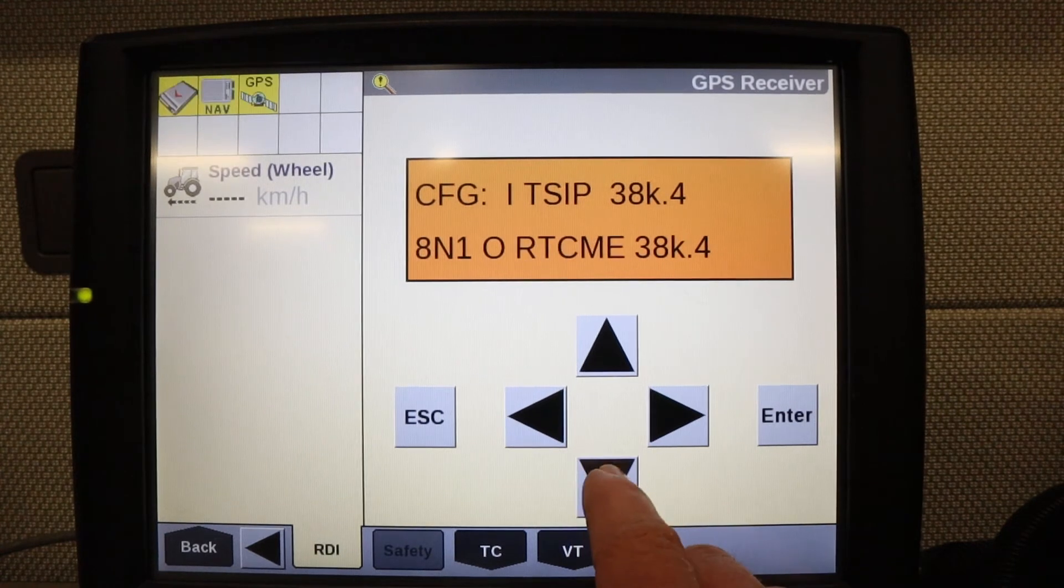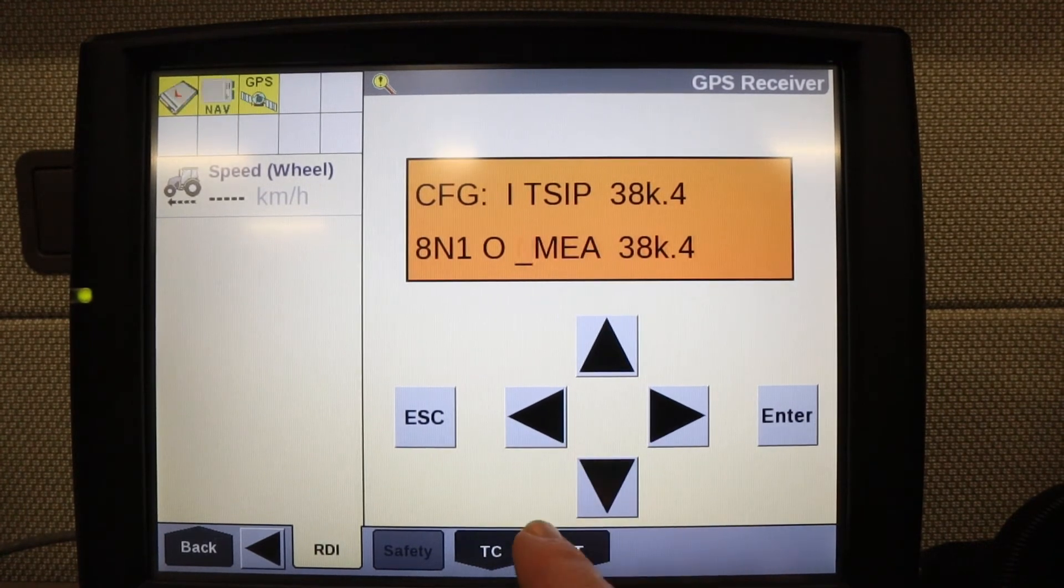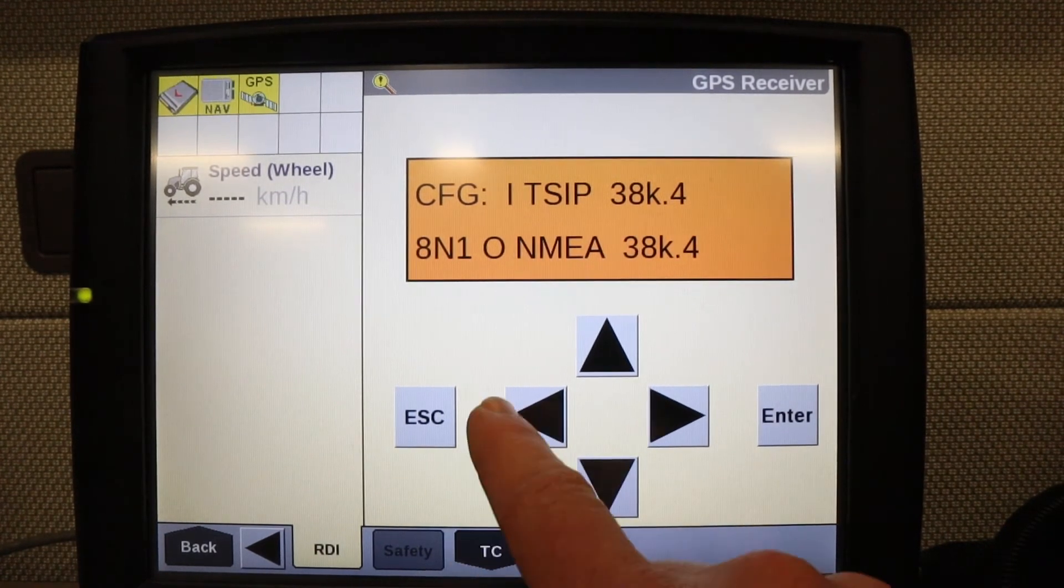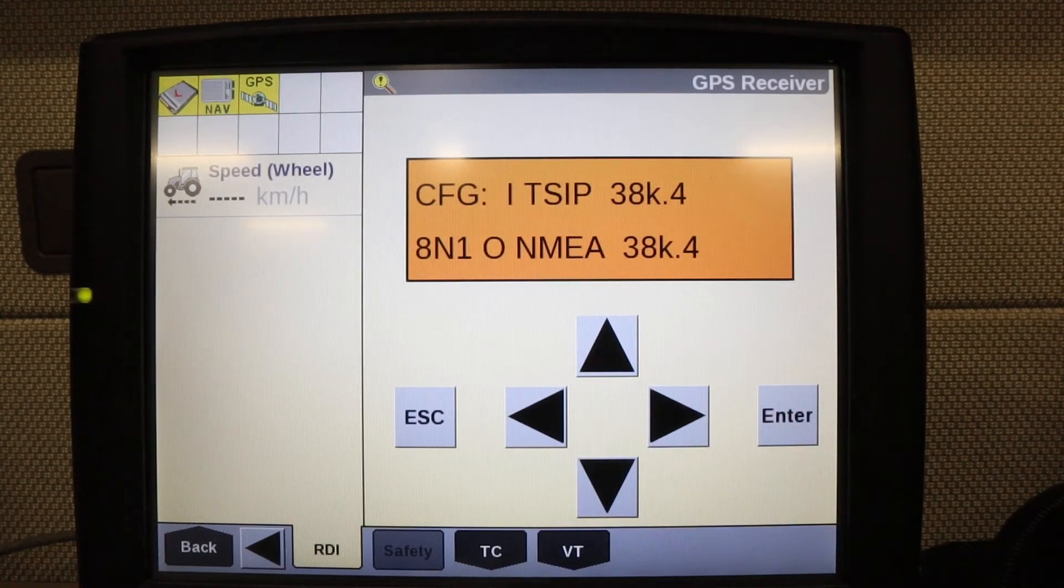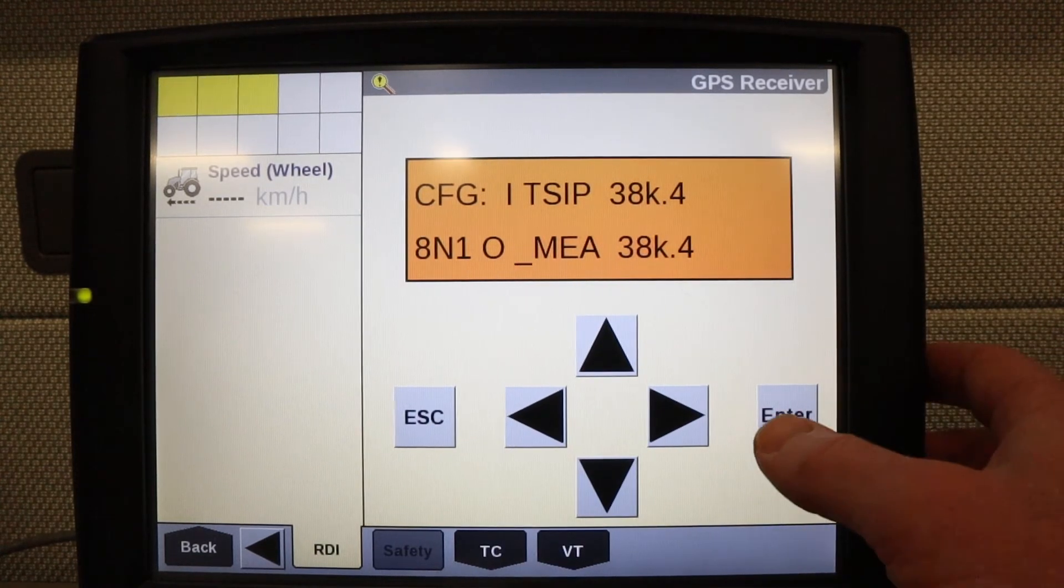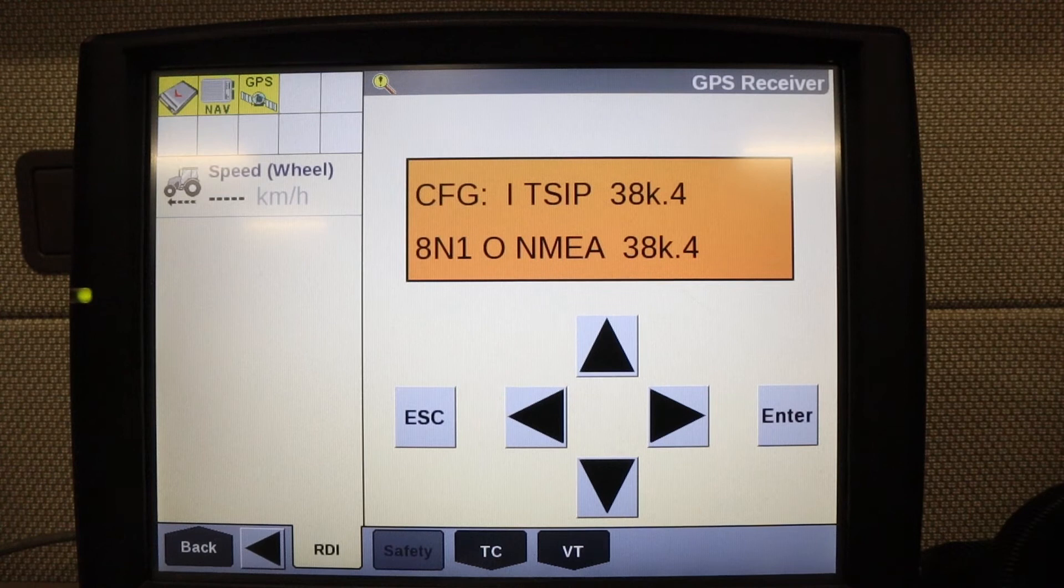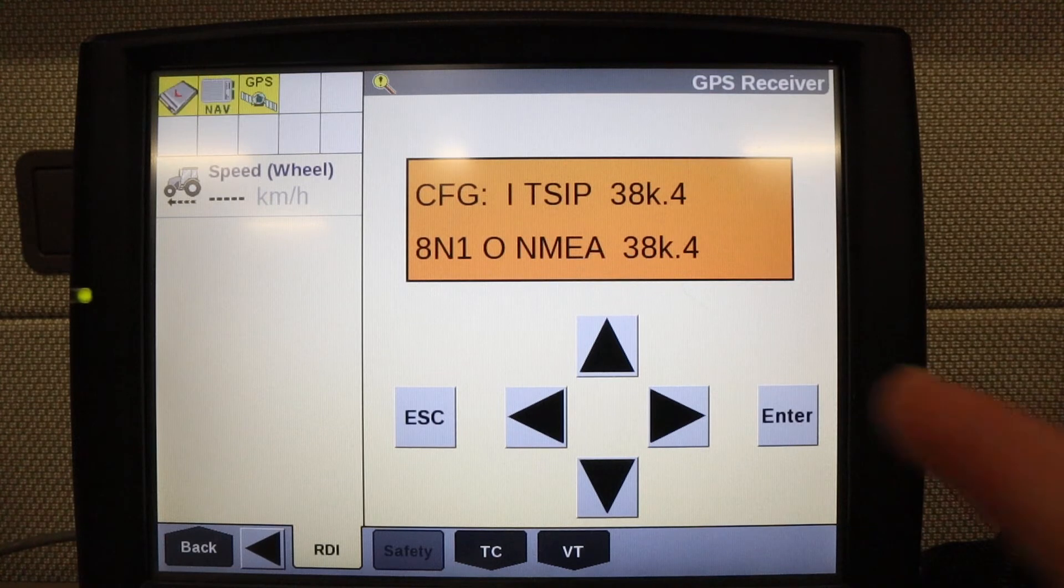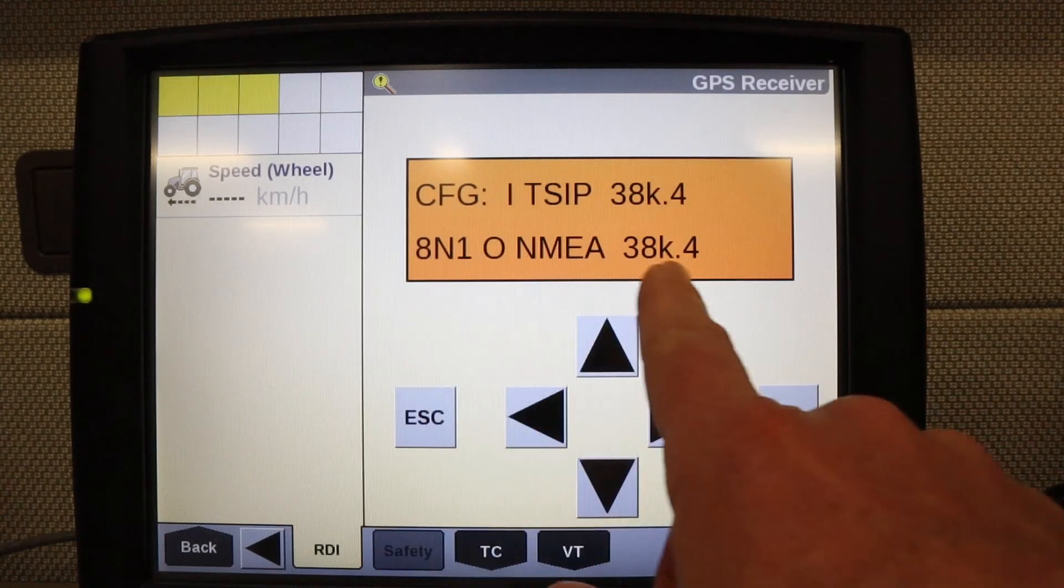I can press the down or up arrows to change that setting. Now you can see I have this setting as NEMA. I'll press enter, and this is the correct setting that you want this page to say. Make sure that your settings match these settings here exactly.